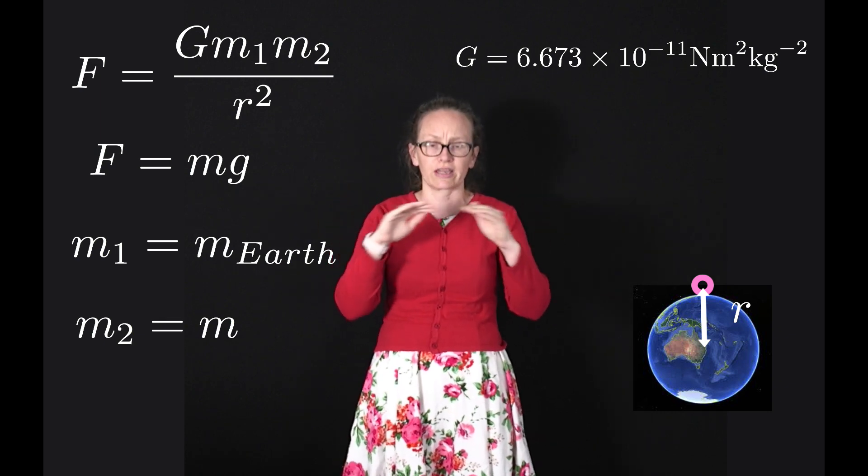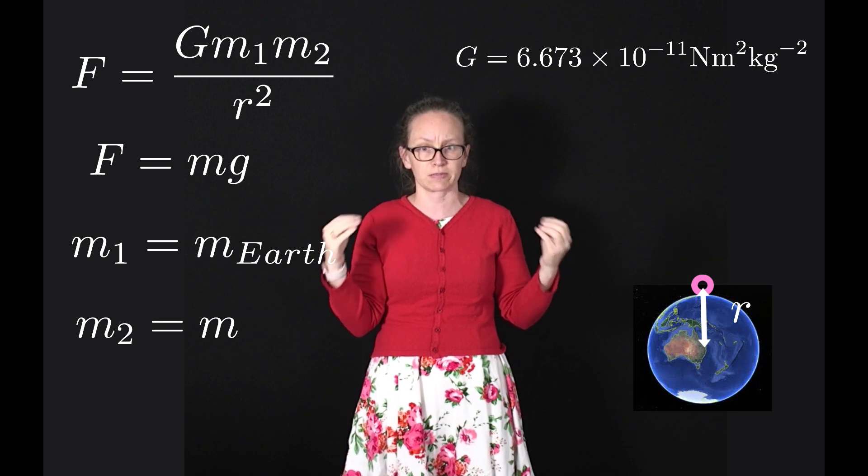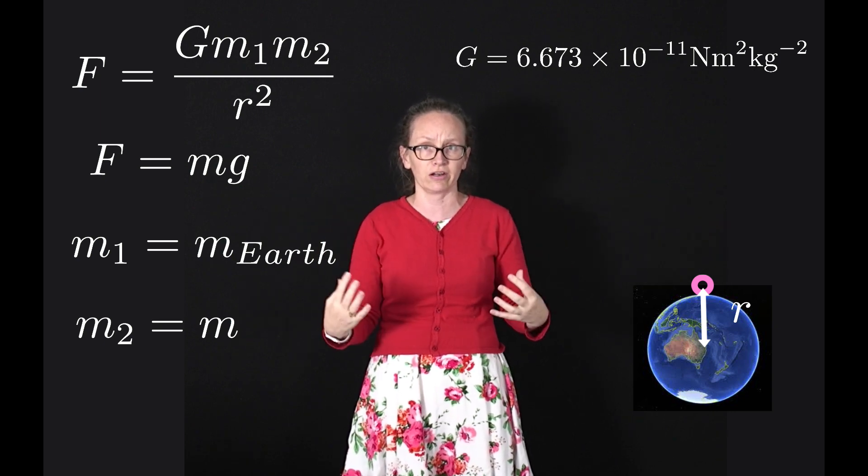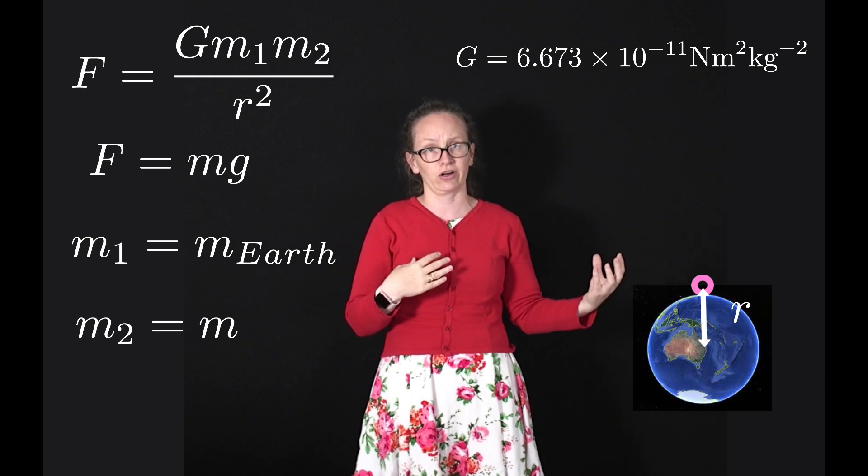We're also considering it close to the surface of the Earth, so this means that the distance between the center of mass of the Earth and the object is approximately the radius of the Earth.